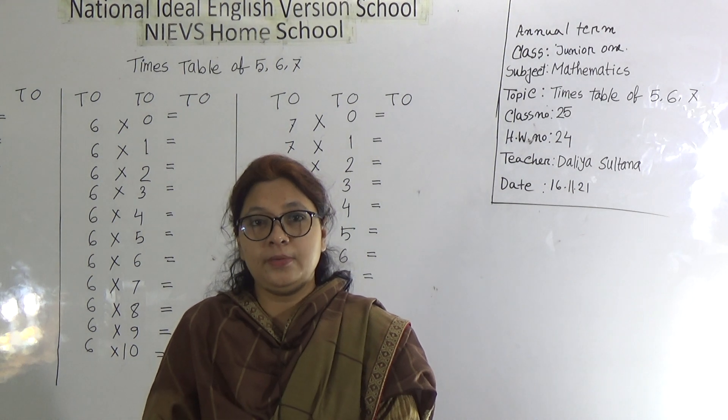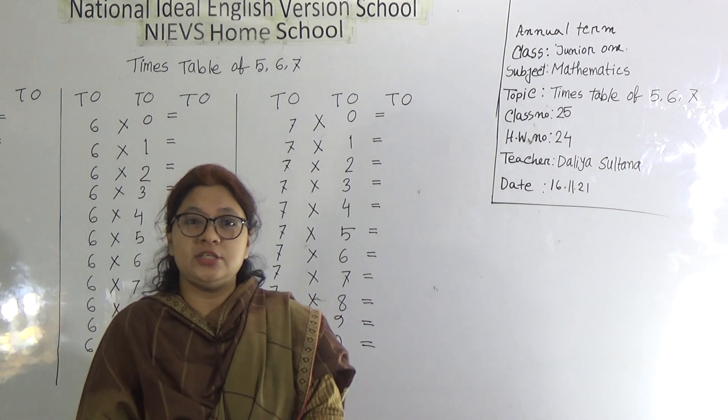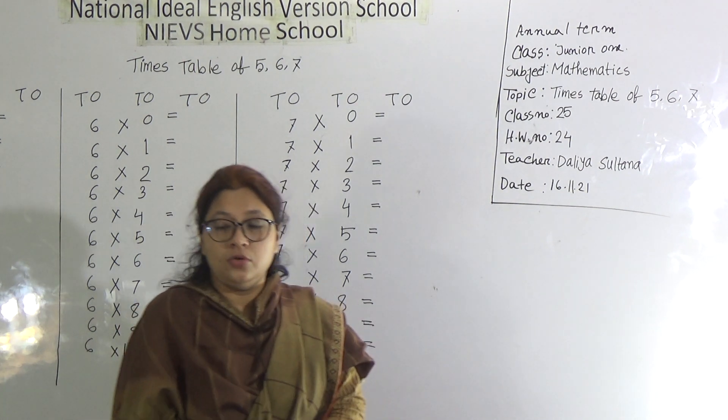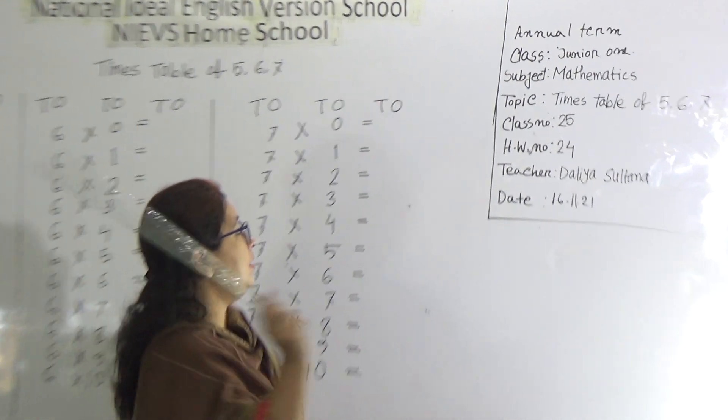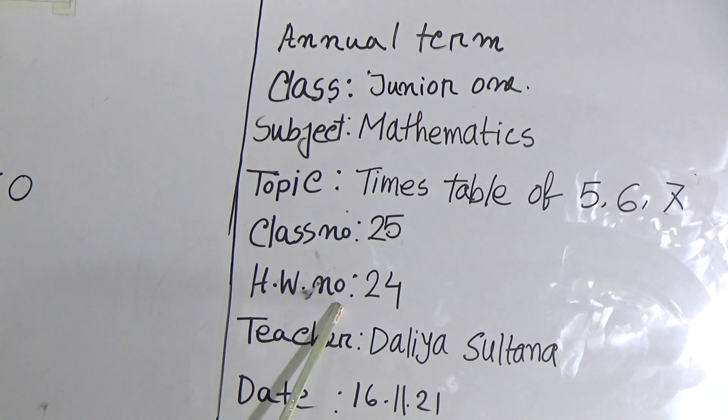Dear students, our today's topic, times table of 5, 6 and 7. Our today's lecture 25 and homework 24. Look at the board. Our today's topic, times table of 5, 6 and 7. Our class number 25 and homework number 24. Now let's start our class.